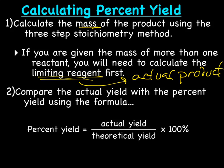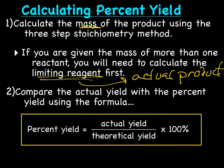Then you compare the actual yield with the percent yield using this formula. Percent yield equals actual yield, what you figured out in the laboratory, divided by theoretical yield. That's what you calculated, times 100% to get your percentage. That's really all there is to percent yield. It's not that difficult.